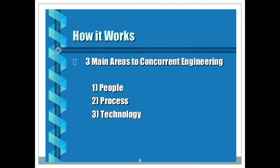The three main areas of concurrent engineering — the factors by which it is achieved — are: number one, people; number two, the process involved; and number three, the technology by which new products are designed and manufactured. These are the three key areas by which concurrent engineering becomes a successful venture. It involves people, process, and technology.